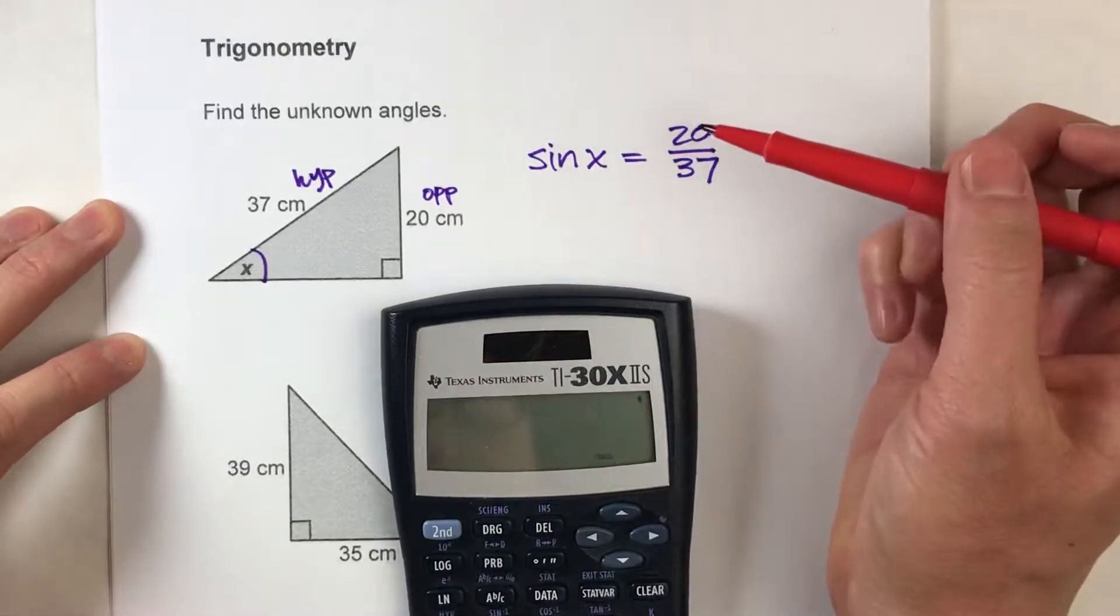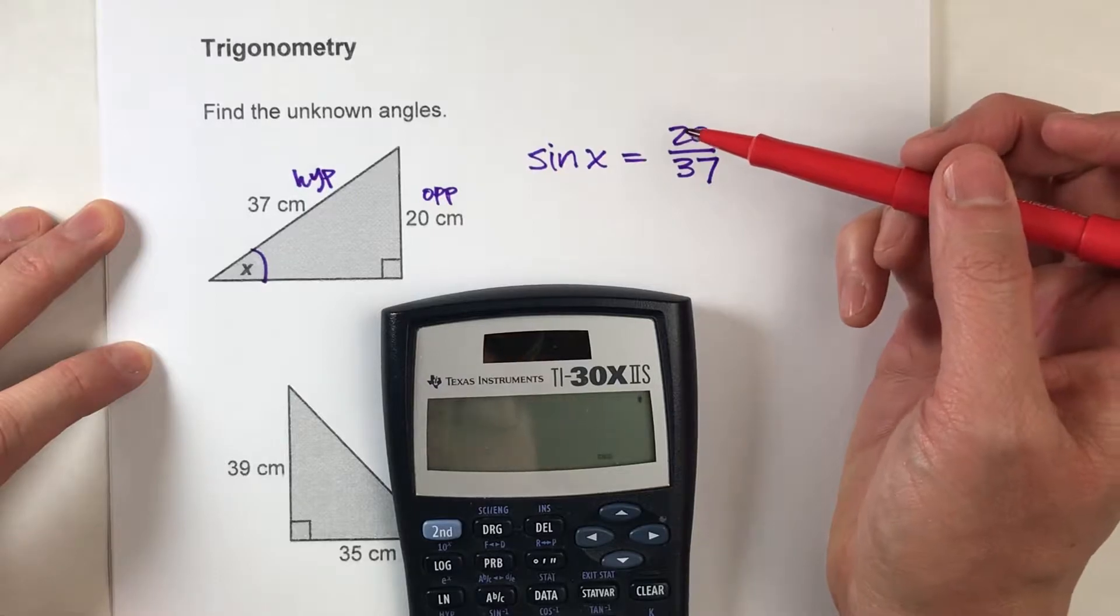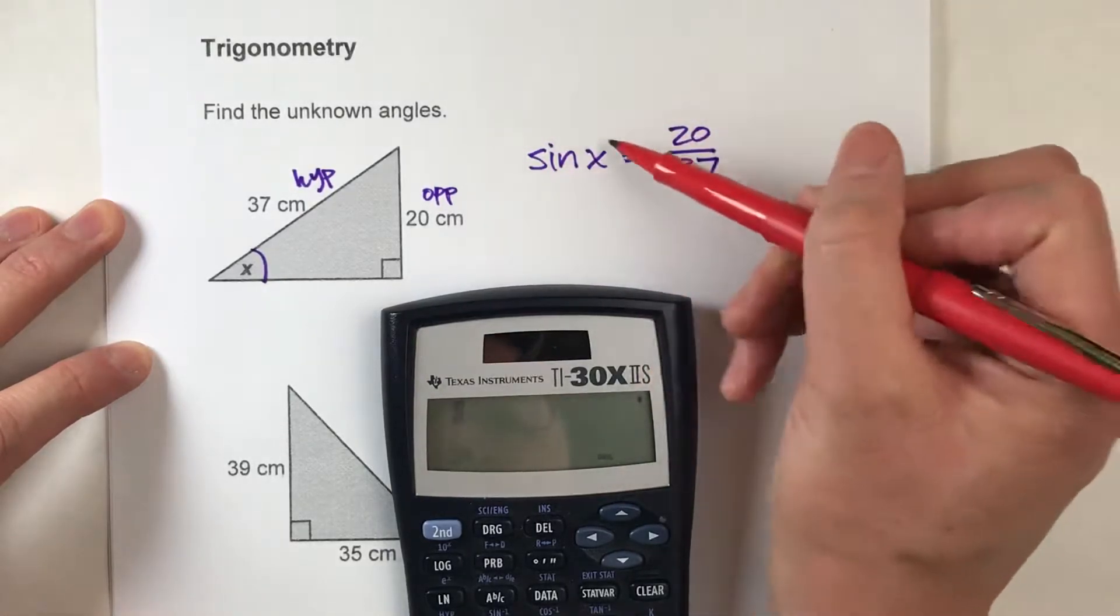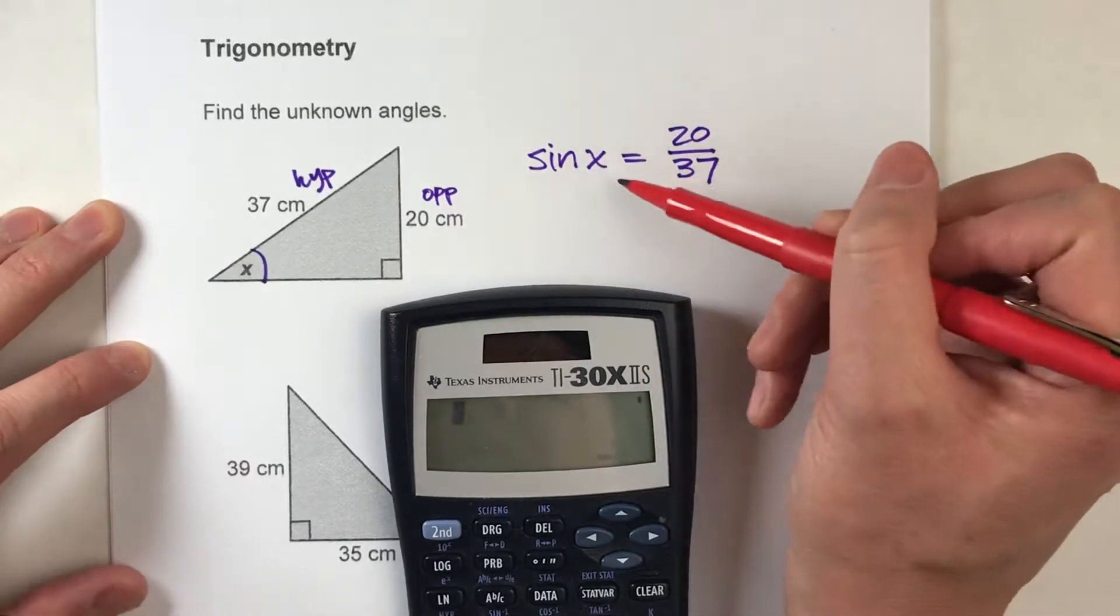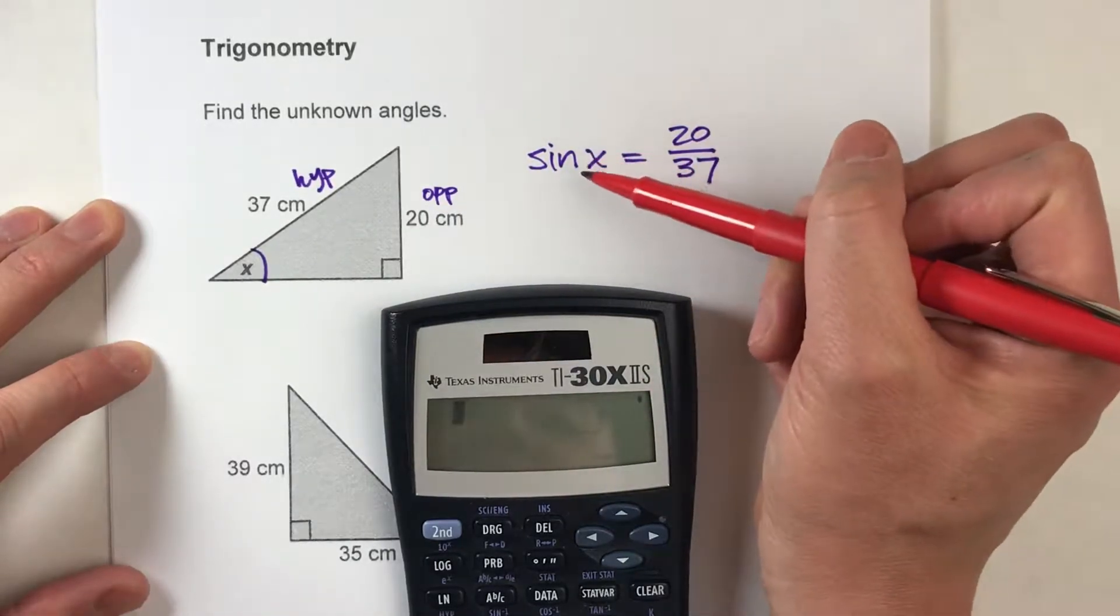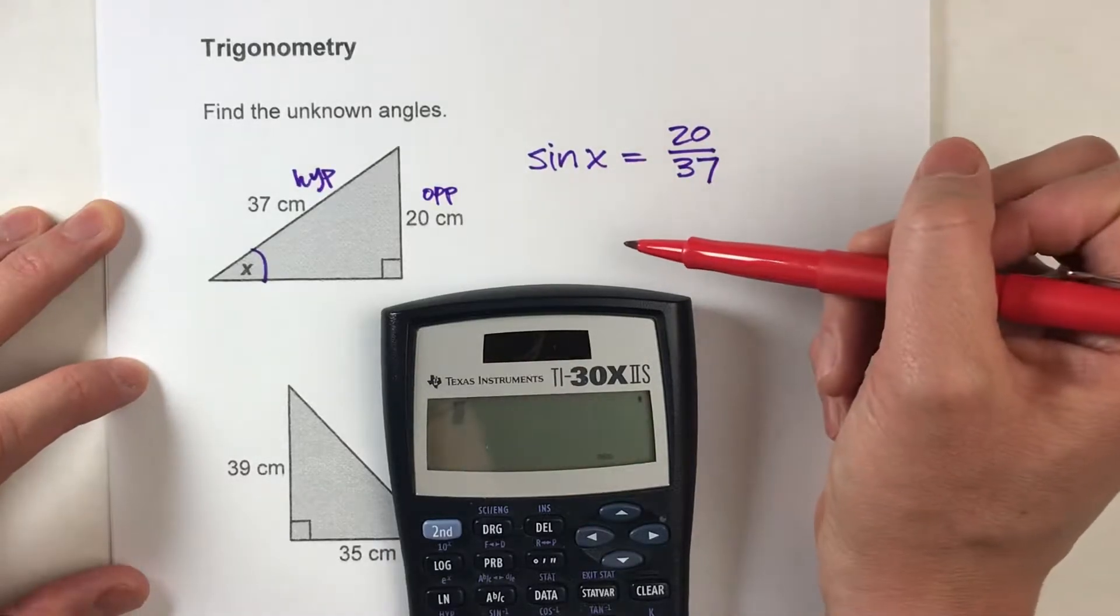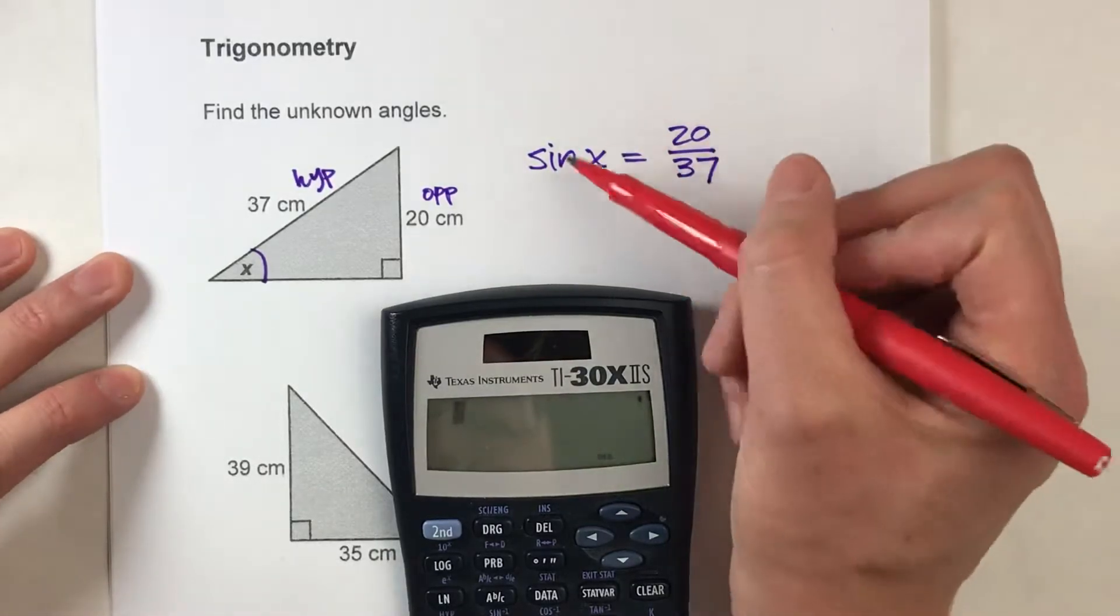And what it amounts to is, what we're basically doing here is trying to undo the algebra equation to solve for x, just like any algebra equation. And we know the opposite of adding is subtracting, the opposite of multiplying is dividing.